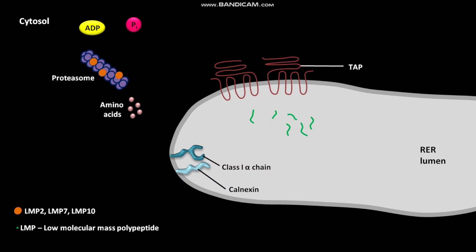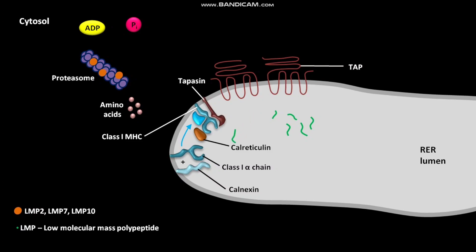The RER membrane has a newly synthesized class I alpha chain and calnexin. Within the RER membrane, the newly formed class I alpha chain associates with calnexin. After some time, a protein complex containing class I MHC, calreticulin, tapasin, and beta-2-microglobulin is formed in the RER. A luminal peptide then binds to this protein complex. We will now discuss in detail the formation of this complex containing class I MHC, calreticulin, tapasin, and beta-2-microglobulin.